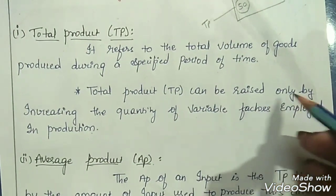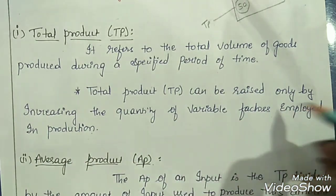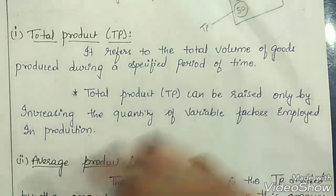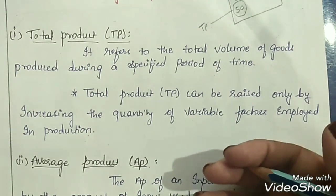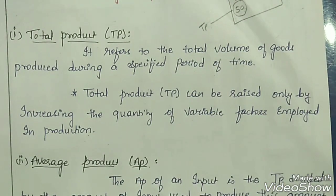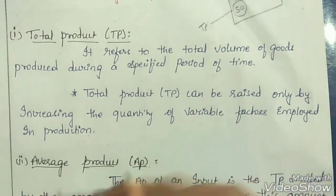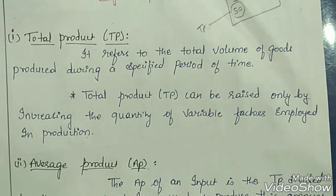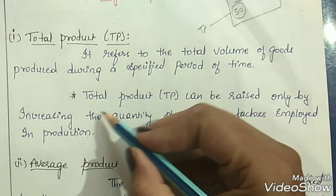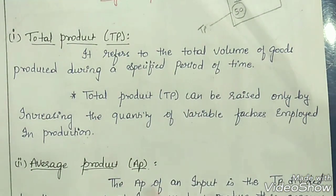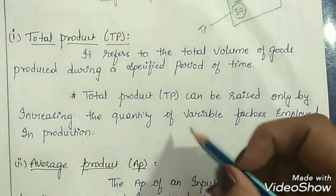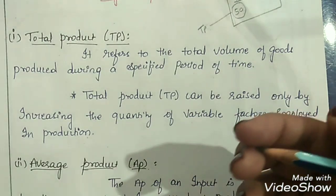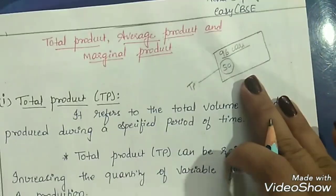The total product can be raised only by increasing the quantity of variable factors employed in production. There are two types of factors: fixed factors and variable factors. In short run, we can increase total product only by changing variable factors, such as labor and raw material.